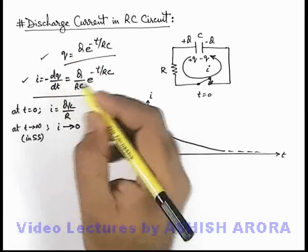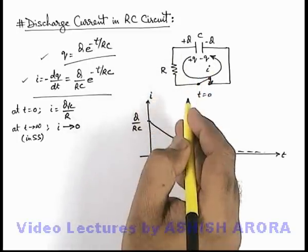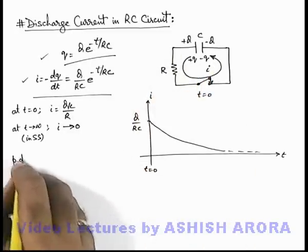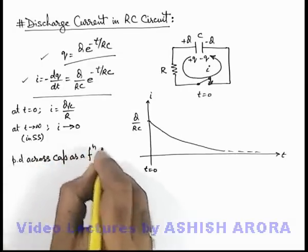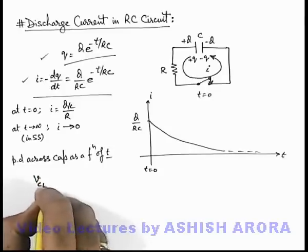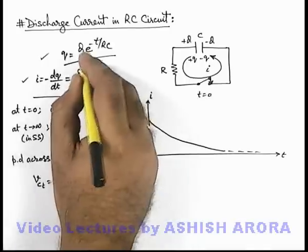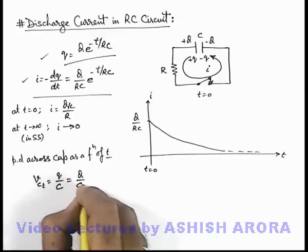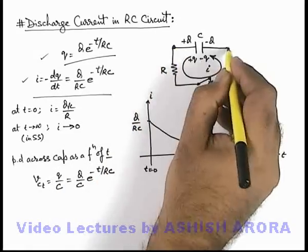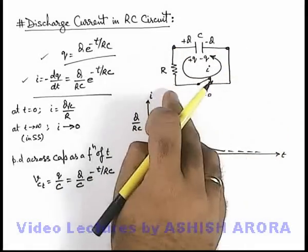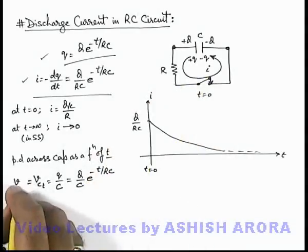Using these two results of charge and current in the circuit as a function of time, we can calculate various parameters of the circuit. For example, the potential difference across the capacitor as a function of time can be directly given as q/C, where q is the instantaneous charge. So we can write it as (Q/C)·e^(-t/RC). The same potential difference exists across the resistance because both are connected in parallel, so V_R(t) is also equal to (Q/C)·e^(-t/RC).